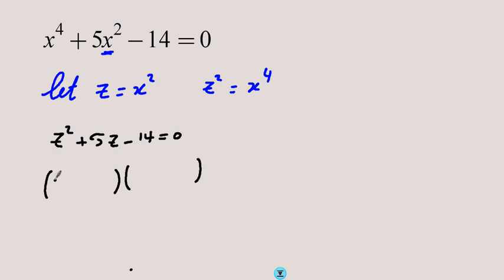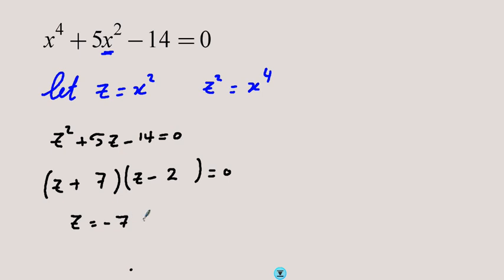We have z and z with different signs — plus and minus. The factors are 7 and 2: since the middle term is positive, 7 goes with the positive sign and 2 with the negative. That gives the factorization, and this means z equals negative 7 or z equals 2.